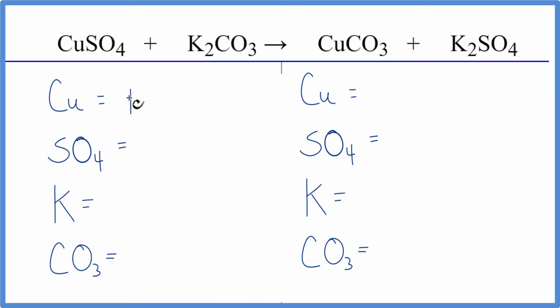We have one copper and then this SO4, it's called the sulfate. We have one here and we have the sulfate again here. It stays together in the chemical reaction. So we're just going to say we have one sulfate, two potassium atoms, and CO3. We have CO3 here. We see it again over here. So we have just the one carbonate, the one CO3.